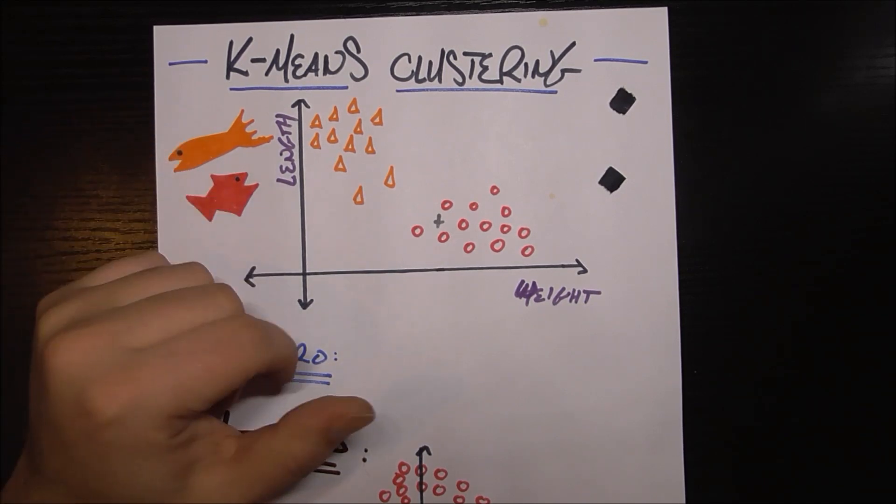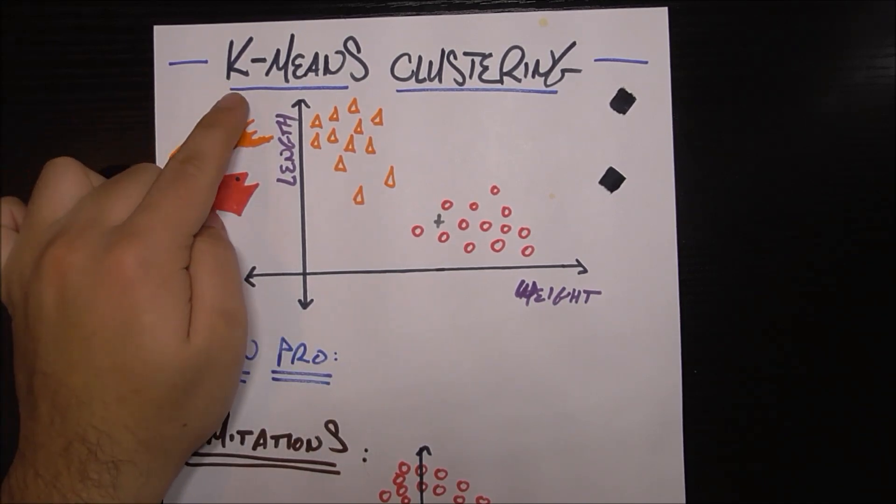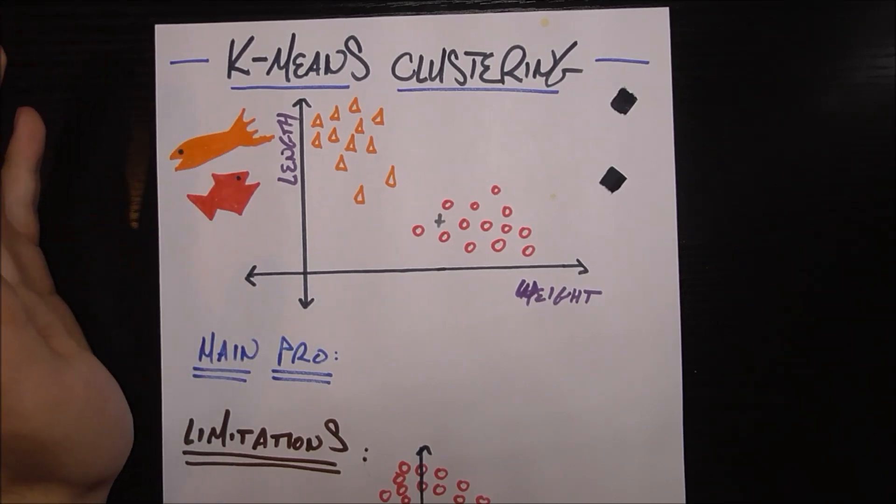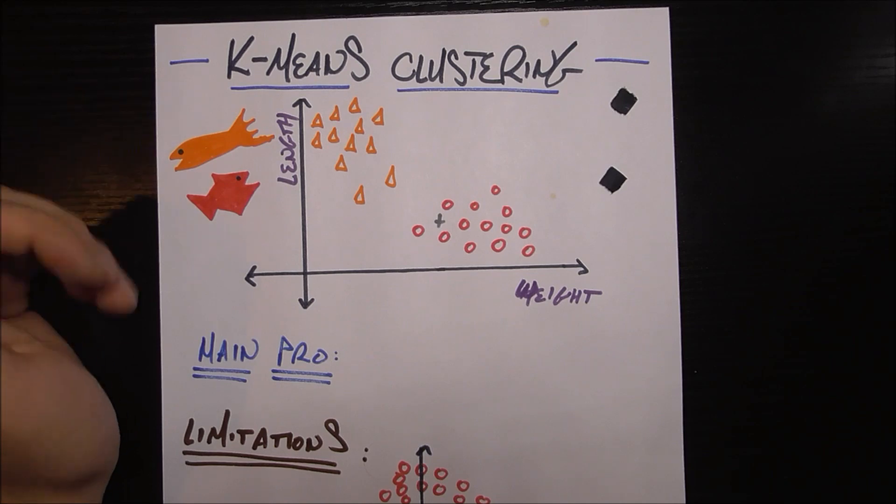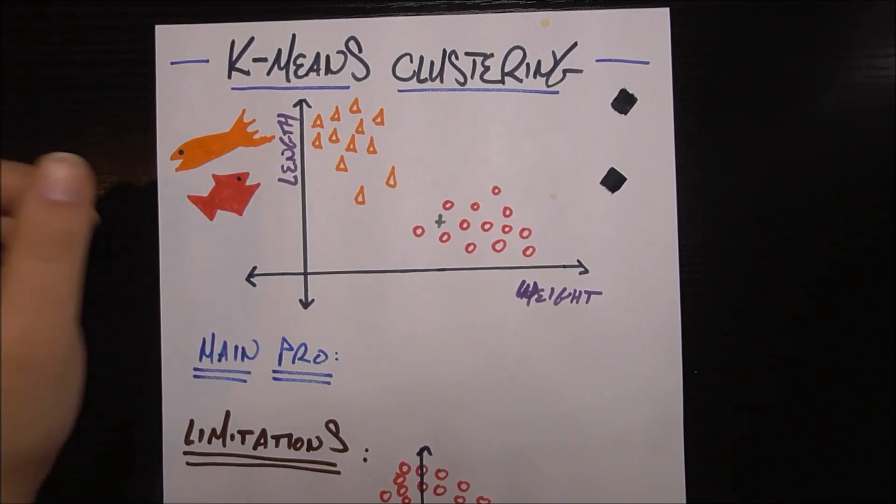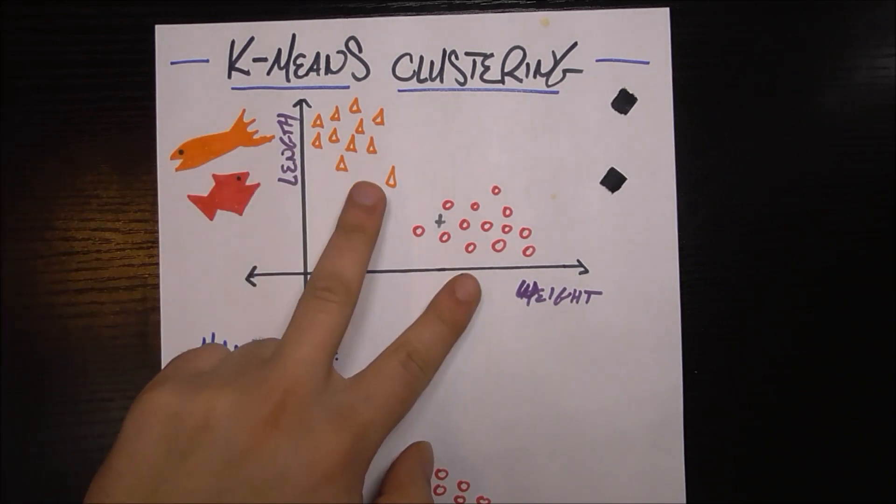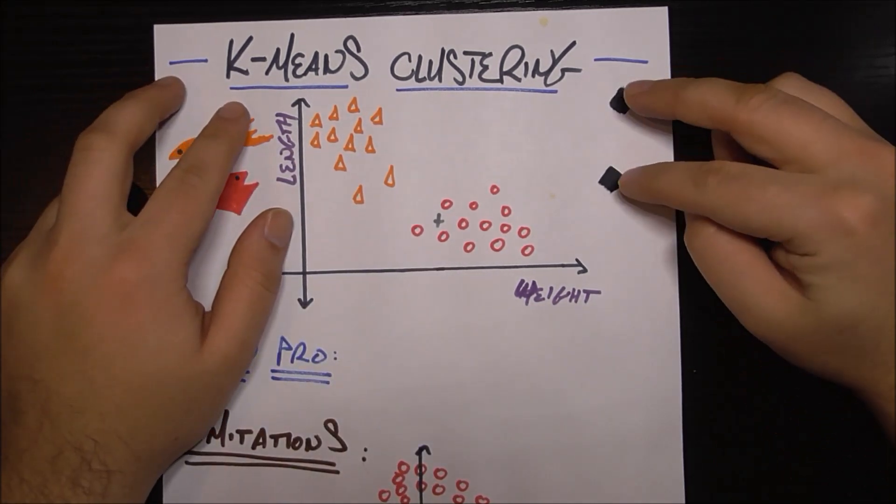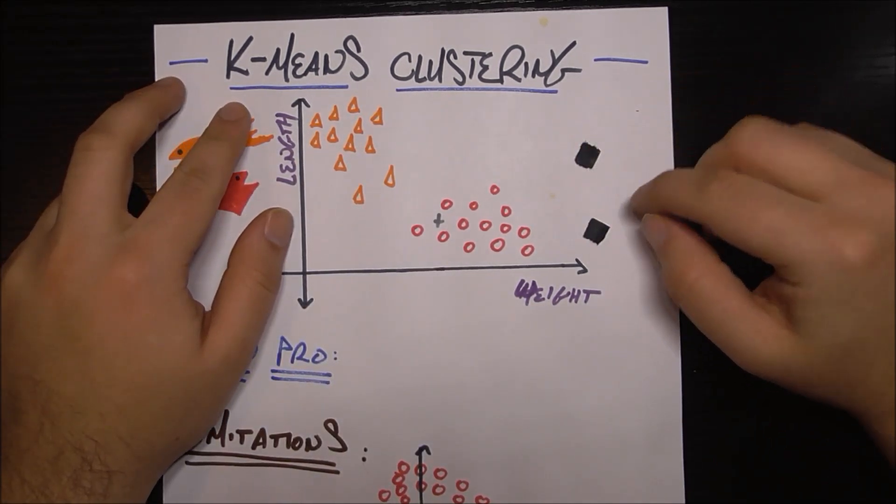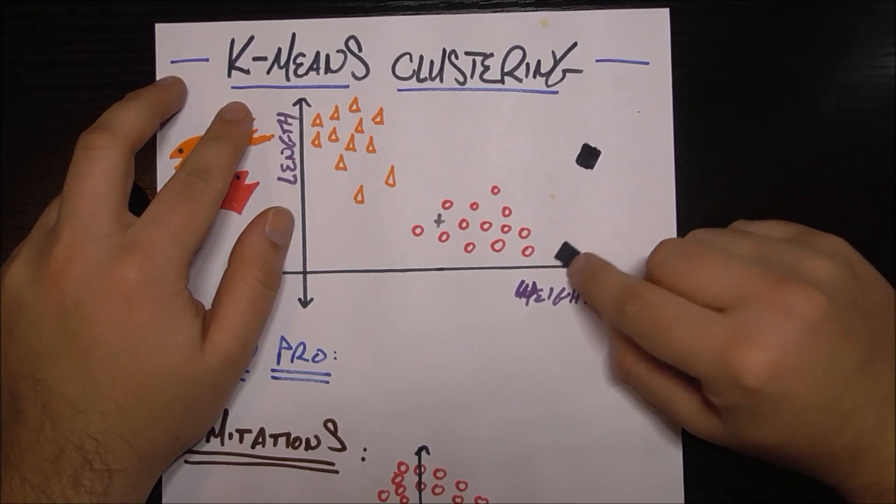So as said before, the first thing you have to do is decide on your k. That's one of the drawbacks of this algorithm is that you need to know how many groups your space is divided into prior to running this algorithm. And sometimes you just don't know. But in this case, we do know that there's two groups, salmon and tuna. So you take the number of groups you have, and you assign that many initialized means.